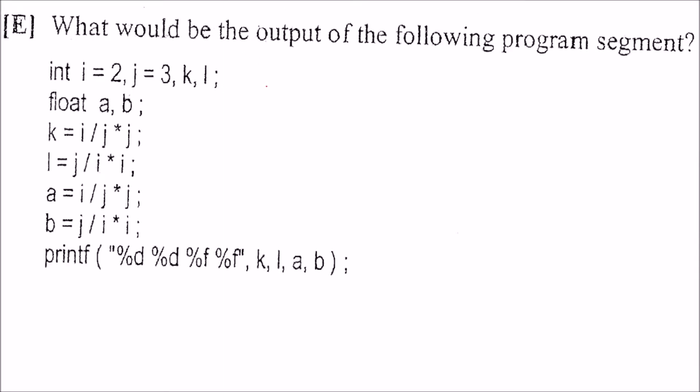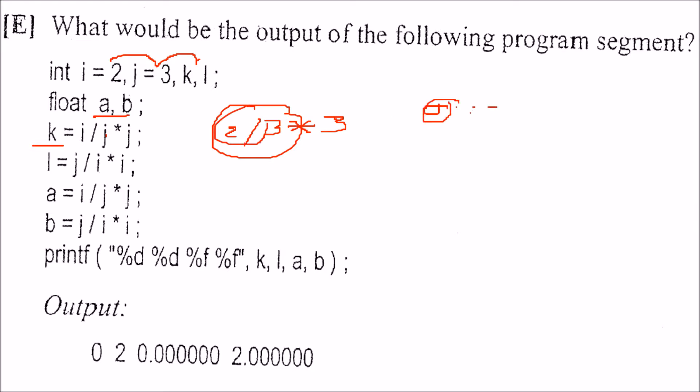What would be the value or the output of the following program segment? See, i is 2, j is 3. First is k and l, all these are integers. a and b are float. So first is k is equal to i divided by j cross j. i divided by j cross j. What you will get? This will be 2 by then j, that is 3 and then cross again 3. So what will be 2 by 3? See, this k is integer. So, you will get 2 by 3. 2 by 3 is, because these are integers, so you will get 0 point something. We will only take 0 because this eventually, the point after the value, after the dot, the value will be discarded. So, this will be 0. 0 into 3 is 0. So, you will get a 0 first. The k will be printed as 0.